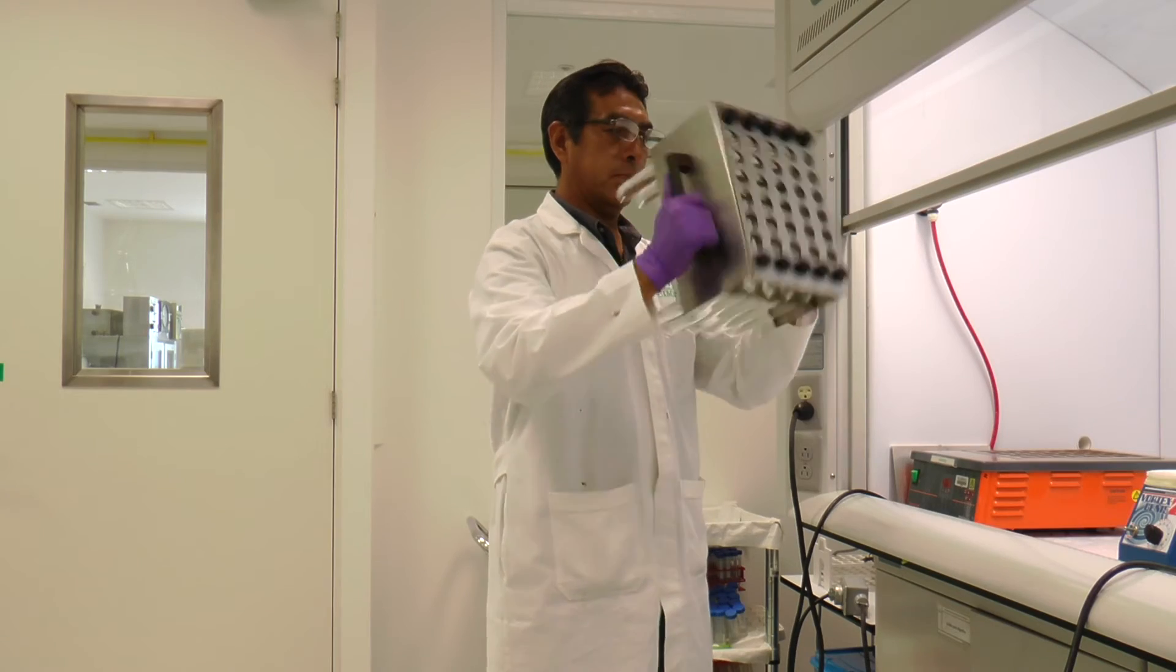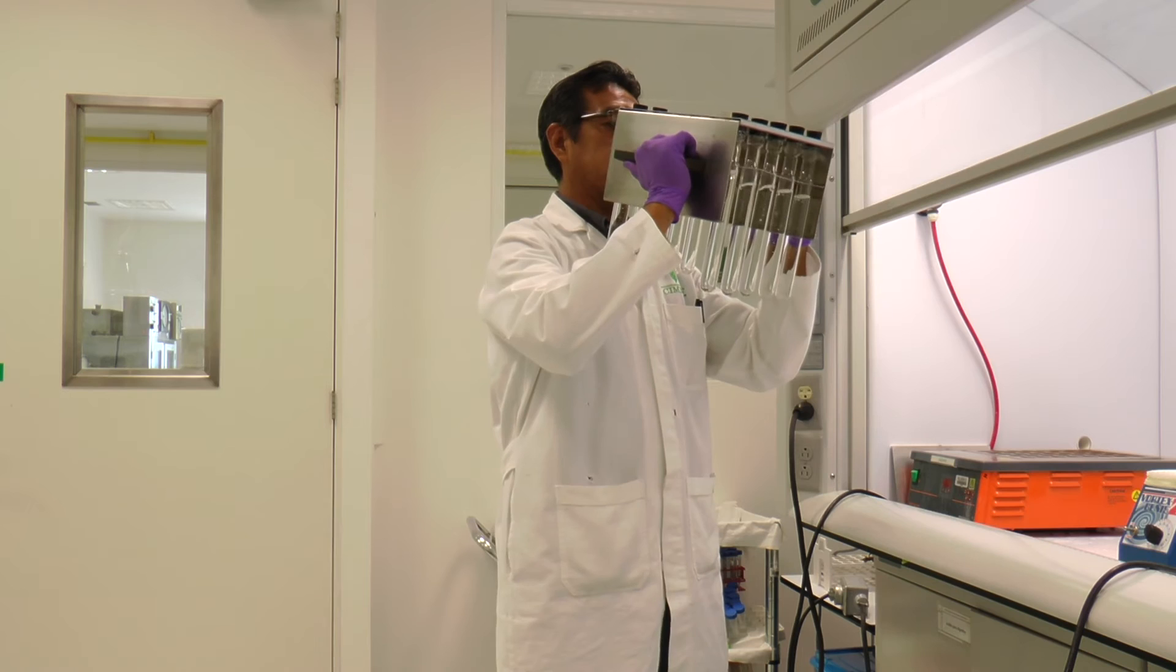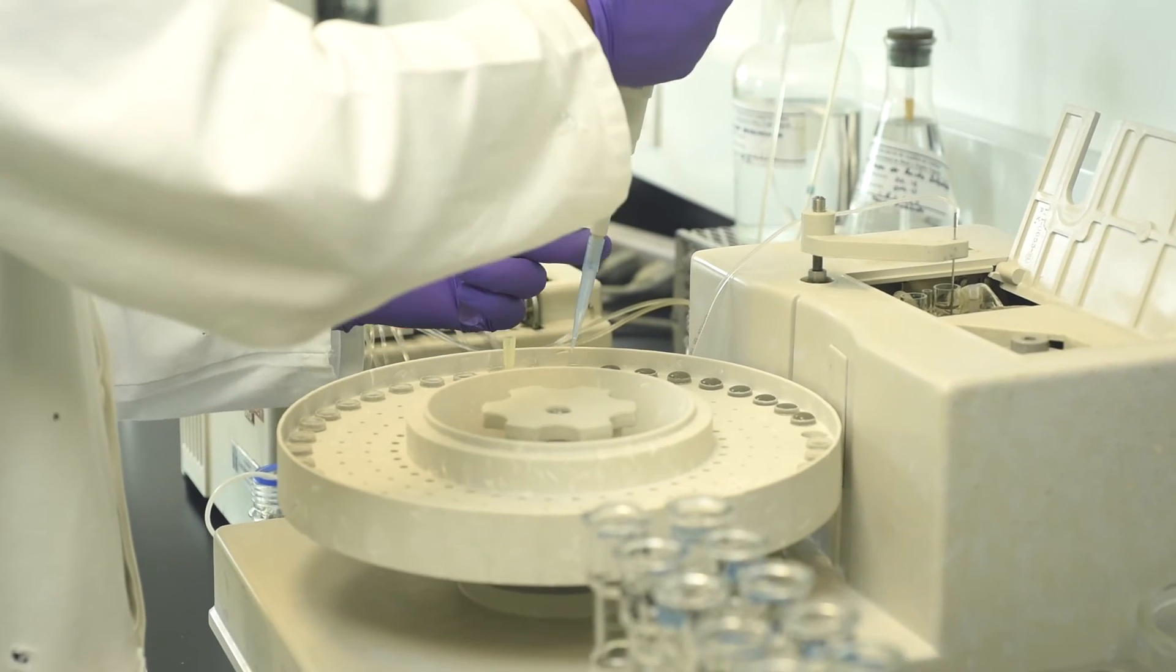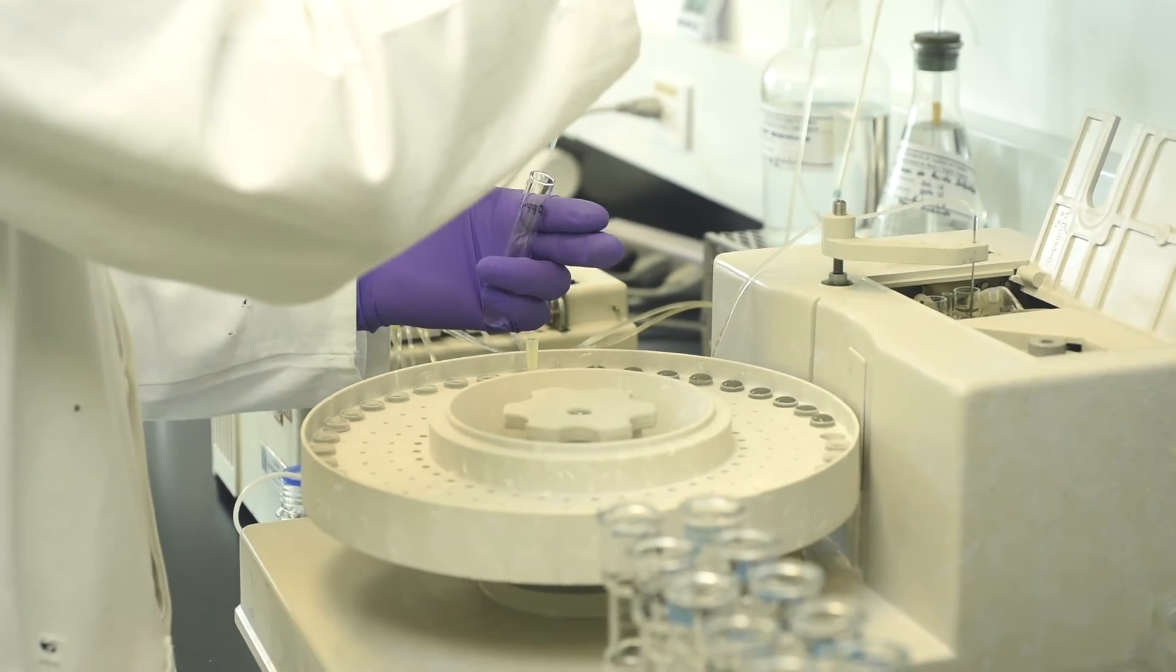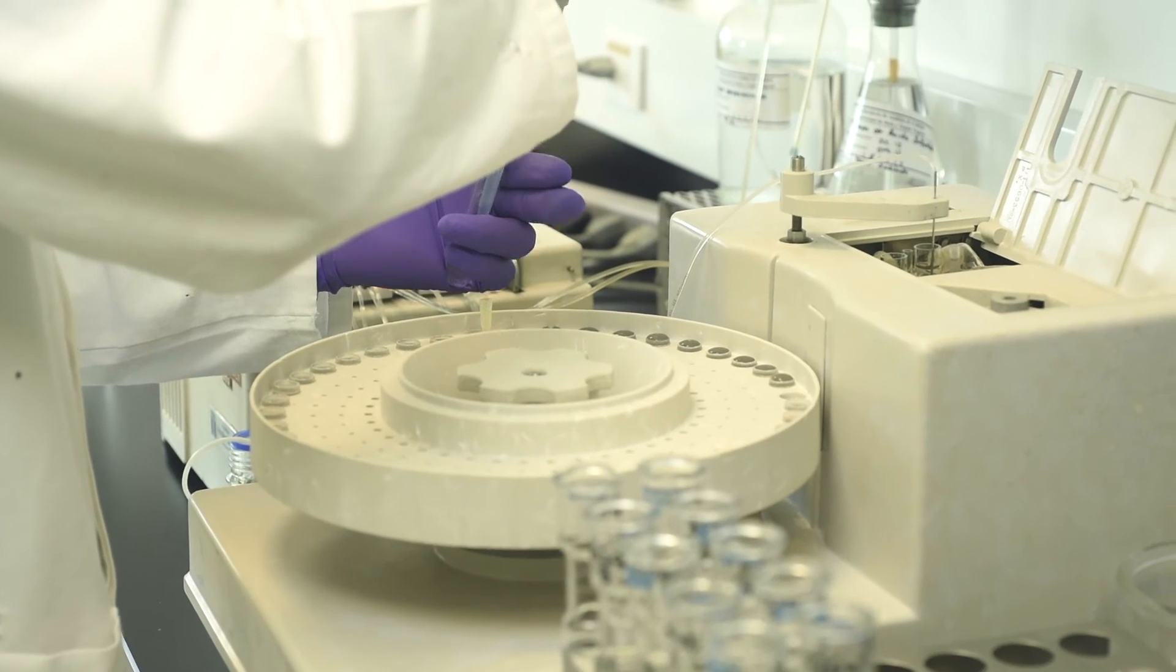Cover the tubes and homogenize the solution by inverting the tubes. Transfer 2 ml of the solution in each tube to the Technicon capsules and put them in the sampler as follows.